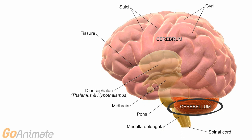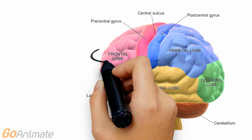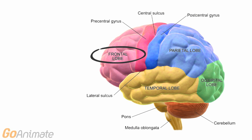The cerebellum is on the posterior inferior aspect of the brain. The cerebrum is divided into lobes. The frontal lobe processes concentration, planning and problem solving along with motor information.